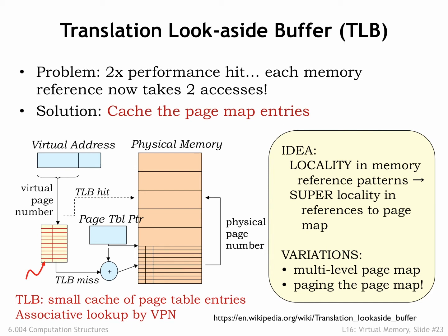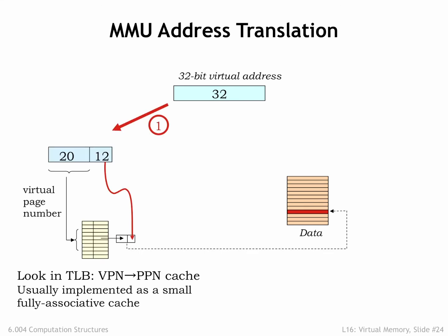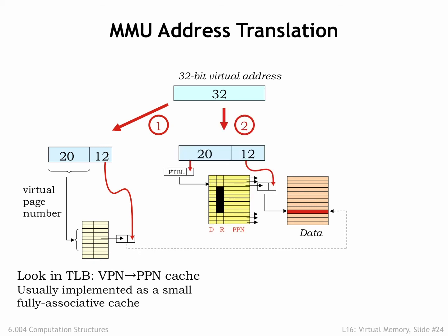There are interesting variations to this simple TLB, page map, and main memory architecture, but the basic strategy will remain the same. The virtual address generated by the CPU is first processed by the TLB to see if the appropriate translation from VPN to PPN has been cached. If so, the main memory access can proceed directly. If the desired mapping is not in the TLB, the appropriate entry in the page map is accessed in main memory. If the page is resident, the PPN field of the page map entry is used to complete the address translation, and the translation is cached in the TLB so that subsequent accesses to this page can avoid the access to the page map. If the desired page is not resident, the MMU triggers a page fault exception and the page fault handler code will deal with the problem.